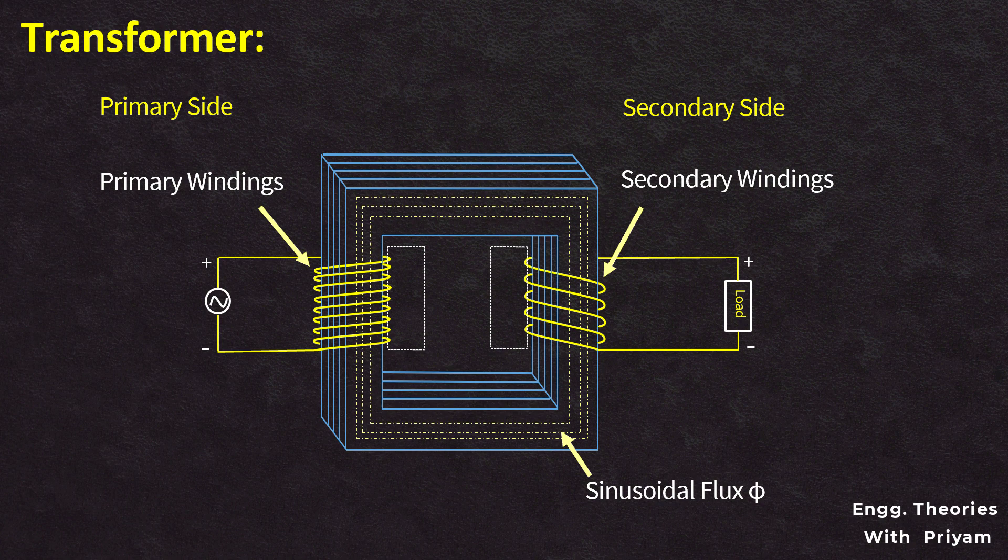Upon connection to the alternating voltage source E1, the primary winding of the transformer generates a corresponding sinusoidal alternating flux in the magnetic core. The flux becomes interlinked with both the primary and secondary windings of the transformer.